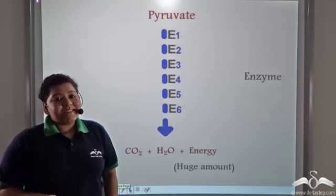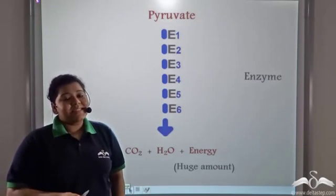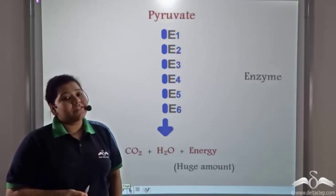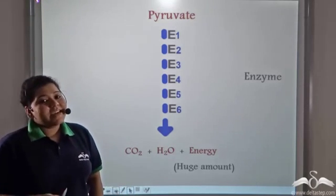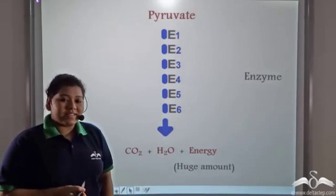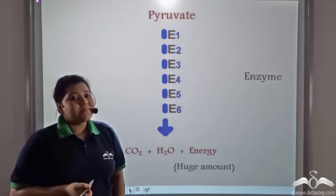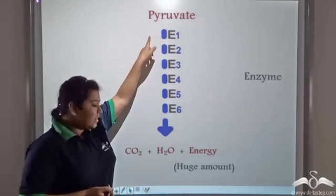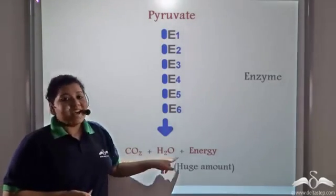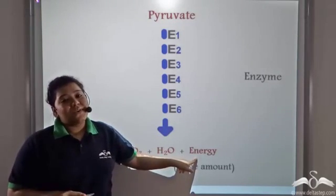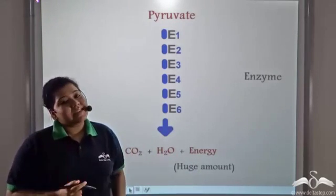So like glycolysis, even this process is a multi-step pathway and every step is aided by enzymes which are biocatalysts. So in this process pyruvate is broken down into carbon dioxide, water and energy which is formed in huge amounts in this step.